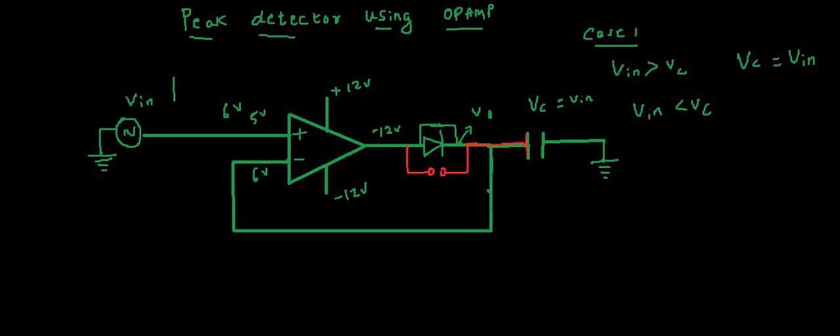Now we are left with only this path when V in is less than VC. We have a capacitor, so there is no way here. So only this way is left. It means it still retains the maximum previous input, that is 6 volts. So VC will be previous maximum input, which will be retained.